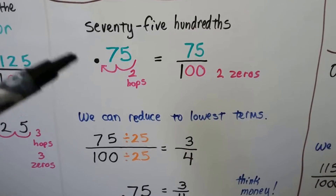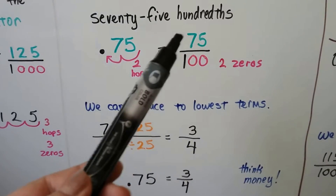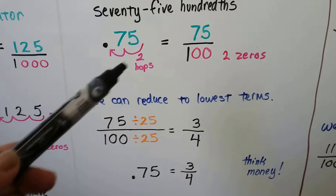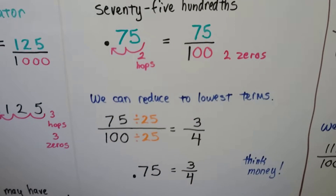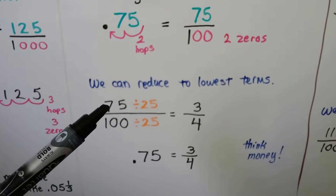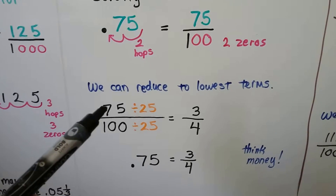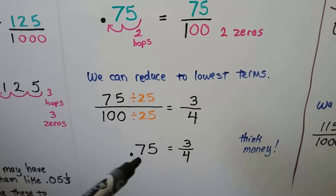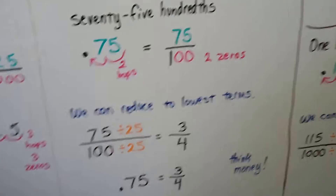Here we have 0.75 — 75 hundredths — which is like 75 cents. If you think of 75 cents of a dollar, that's three quarters. We count two hops, so there are going to be two zeros in the denominator. 75 is our numerator. We can reduce 75 over 100 by dividing by 25 — thinking of money, there are three quarters in 75 cents and four quarters in a dollar. So 0.75 equals three-fourths. 75 cents is three quarters of a dollar.